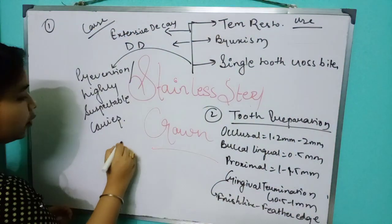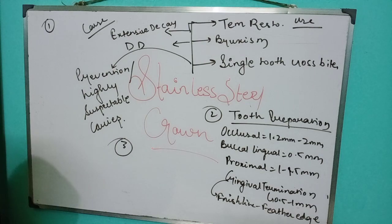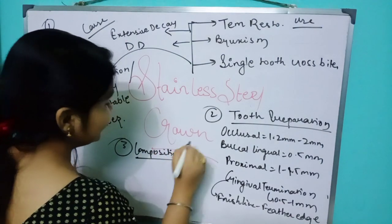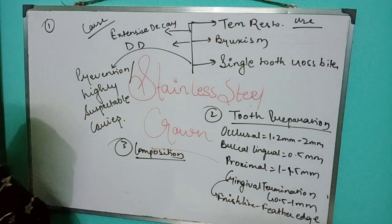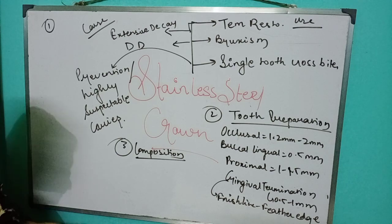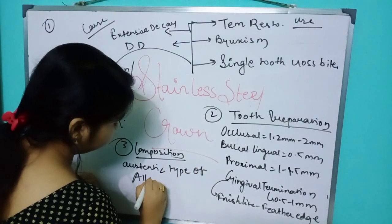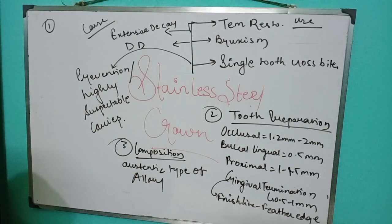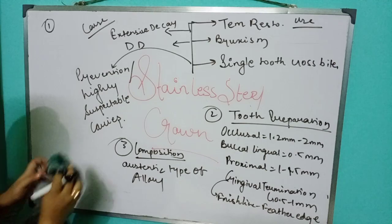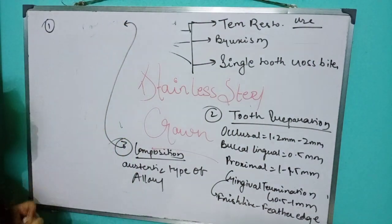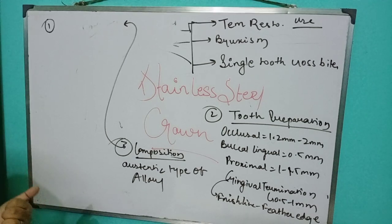The third important point is composition. What is the stainless steel crown made of? It is an austenitic type of alloy. It is divided into two types: Rocky Mountain (also known as Unity) and the nickel base crown.